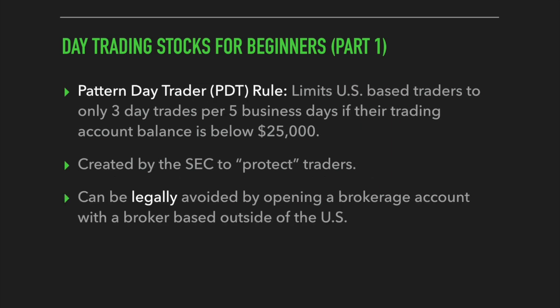There are also cons to day trading. The first is the pattern day trader rule, commonly referred to as the PDT rule, which limits US-based traders to only three day trades per five business days if their account balance is less than $25,000. Most new traders fall under this rule. The SEC put it in place to protect traders, but it often forces traders to hold positions overnight that they'd rather exit. Still, using a quality-over-quantity approach, you can make good use of those three day trades.